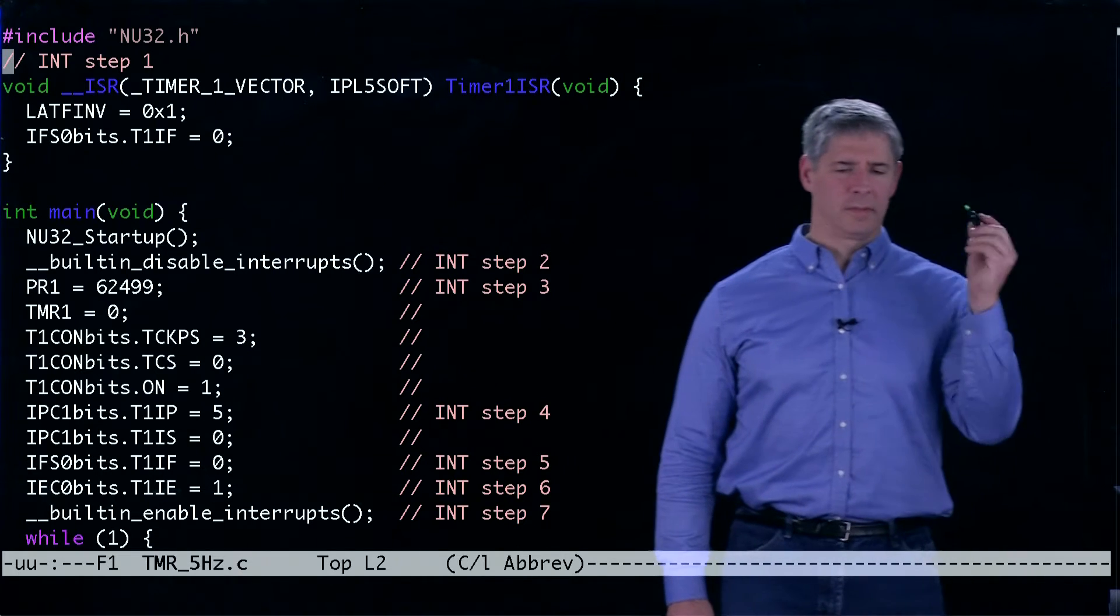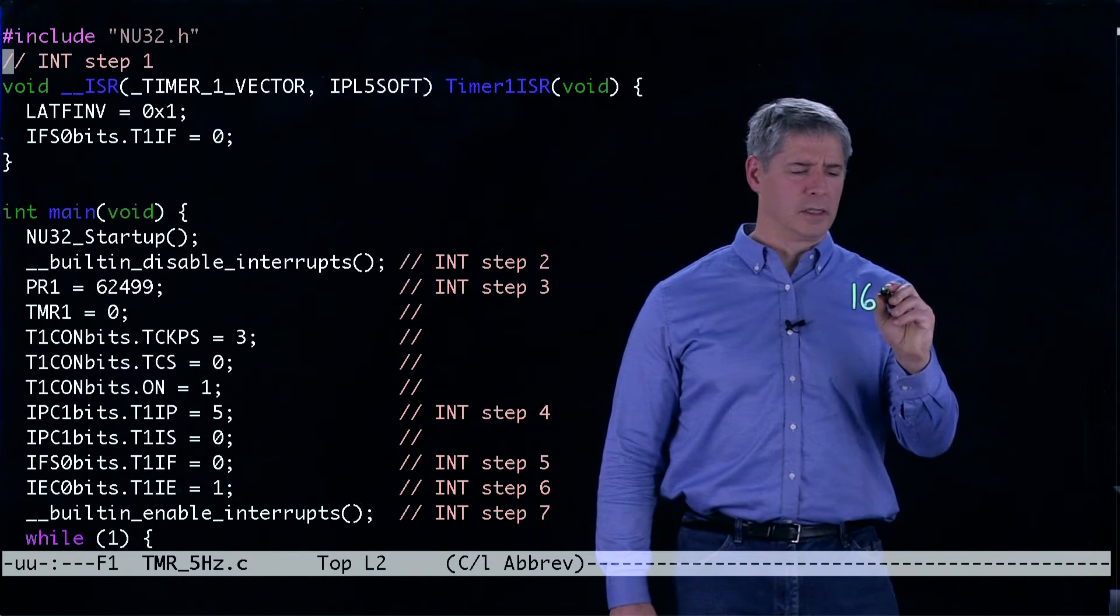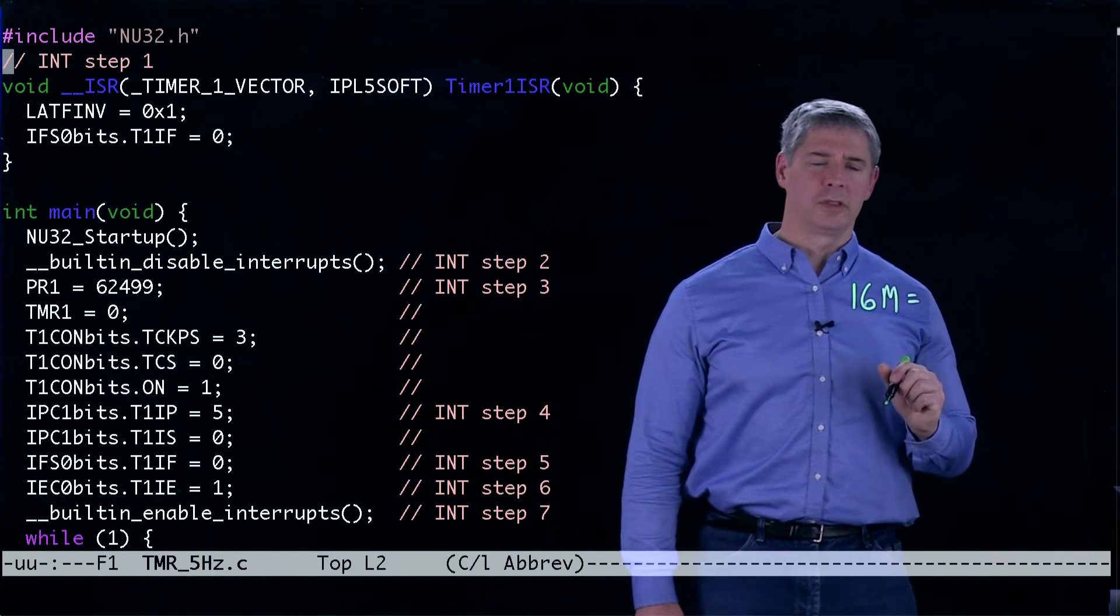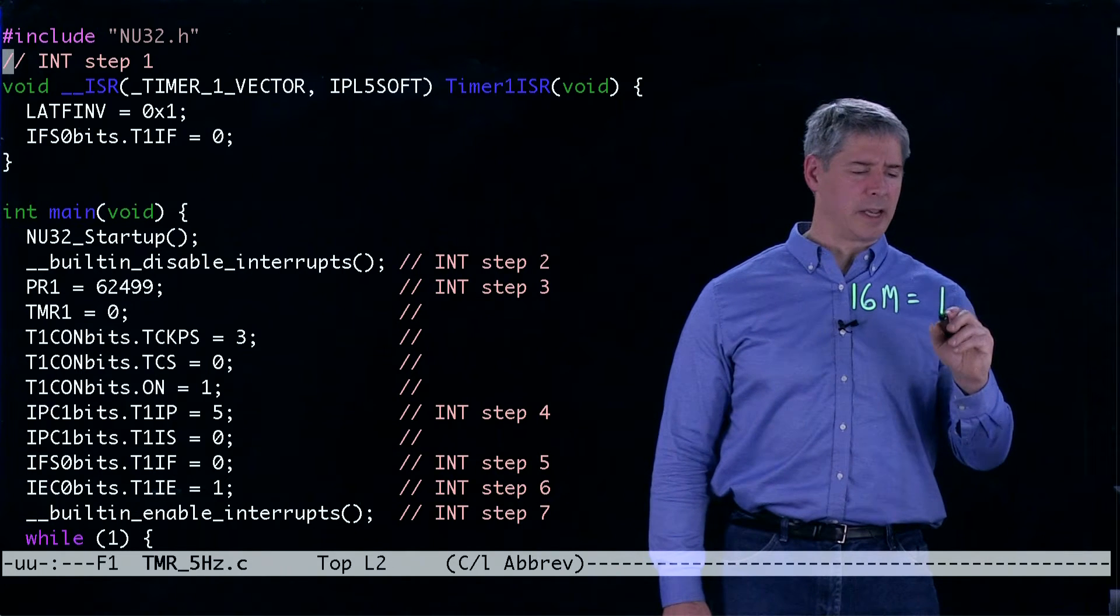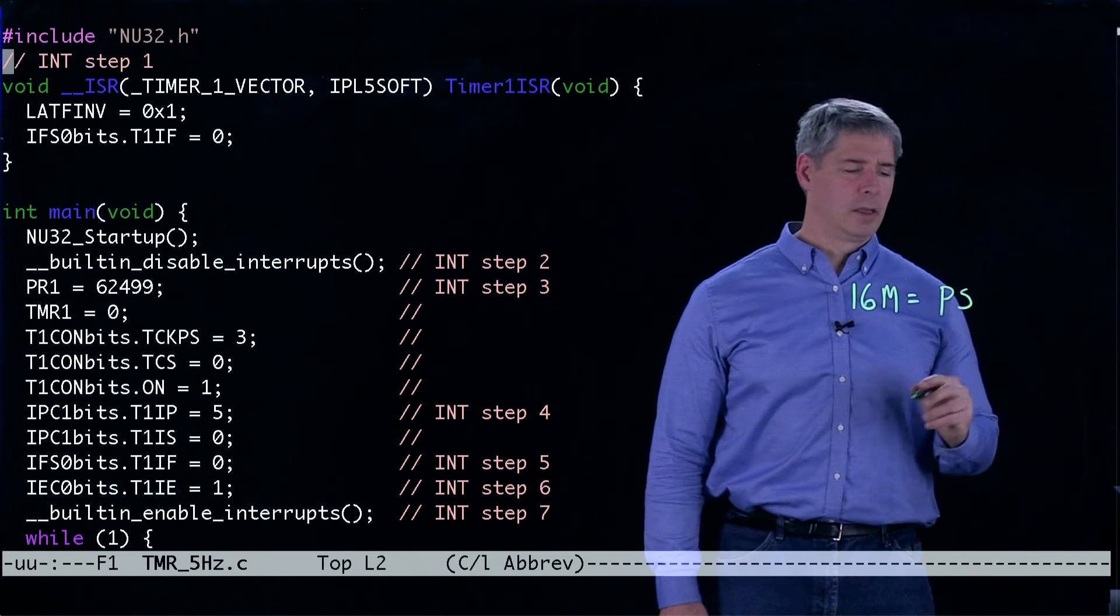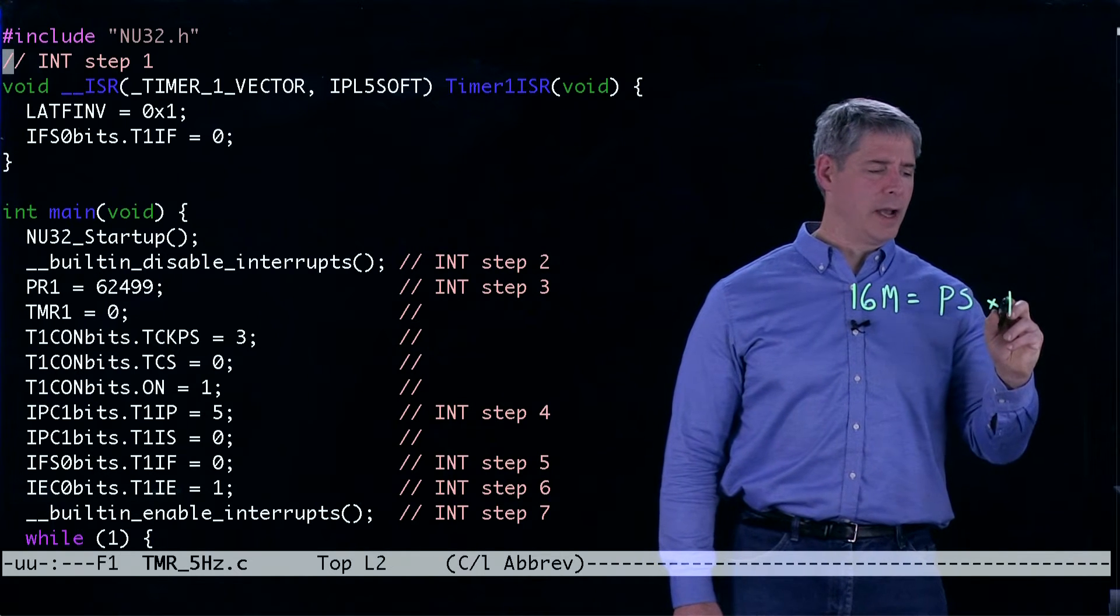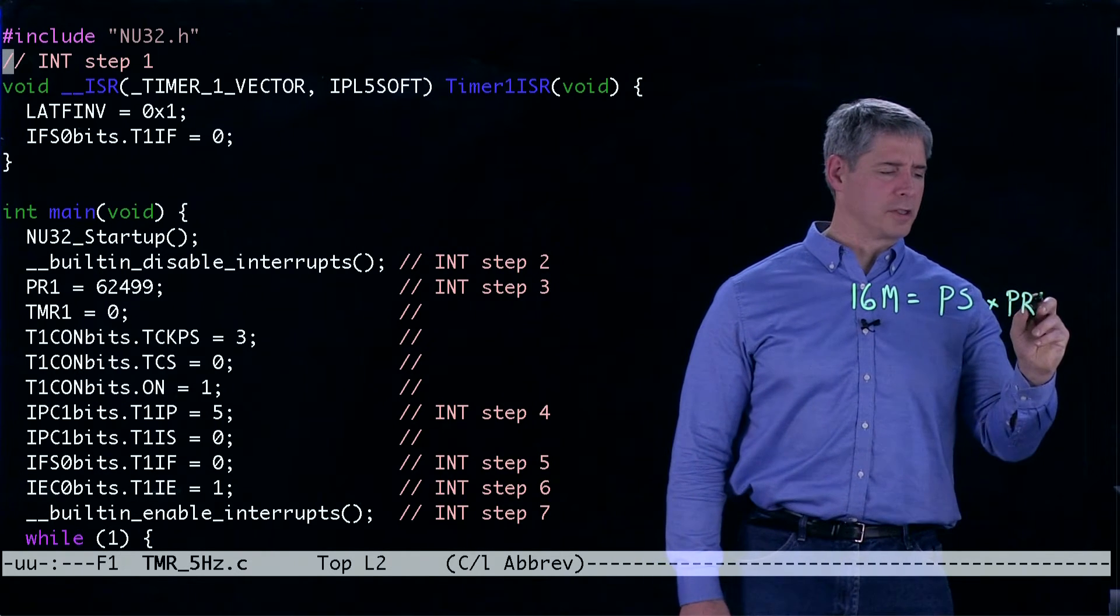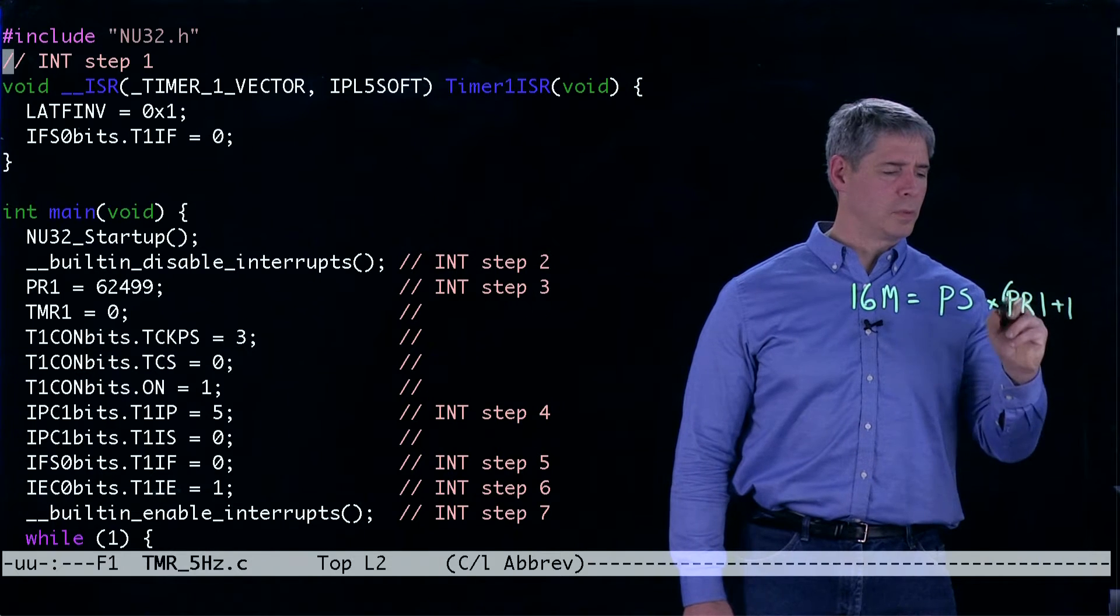So if we say that 16 million has to be equal to the prescaler for timer1 multiplied by its period register plus 1, we need to find the prescaler value and the period register value that will give us 16 million.